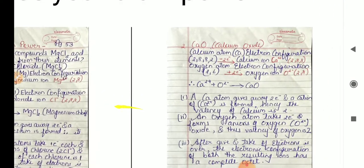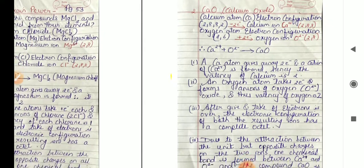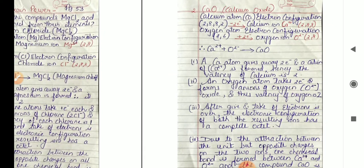After give and take of electrons is over, the electronic configuration of all resulting ions has a complete octet. Due to attraction between the unit but opposite charges on all the ions, one chemical bond is formed between Mg2+ and 2Cl- each, and a compound MgCl2 is formed. Now let us see about CaO, that is calcium oxide. The electronic configuration of calcium atom is 2,8,8,2. It donates 2 electrons, calcium ion Ca2+ is formed, and configuration becomes 2,8,8. Oxygen atom has electron configuration 2,6. It accepts 2 electrons, oxygen ion O2- is formed, and configuration becomes 2,8,8.